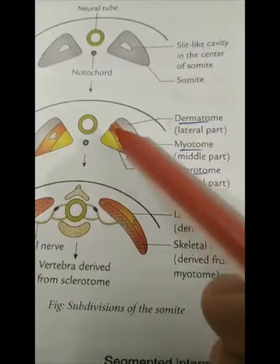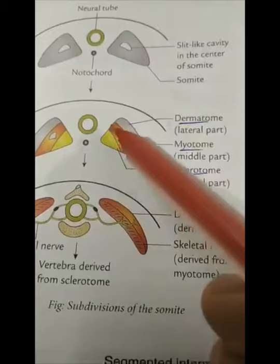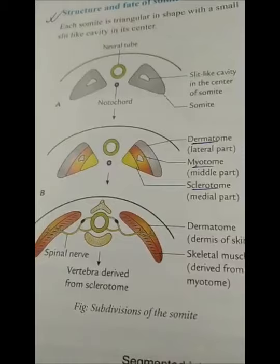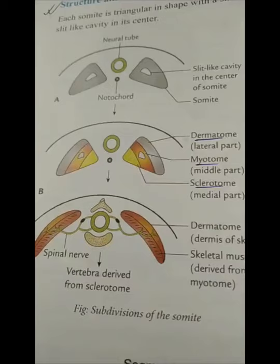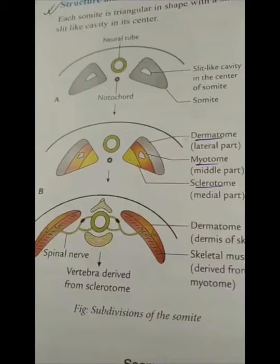The intermediate mesoderm gives rise to the genitourinary system: kidney, ureter, and trigone of the urinary bladder. It also forms the uterus, part of vagina (female), and testis, epididymis, and vas deferens (male) — the entire genitourinary system.